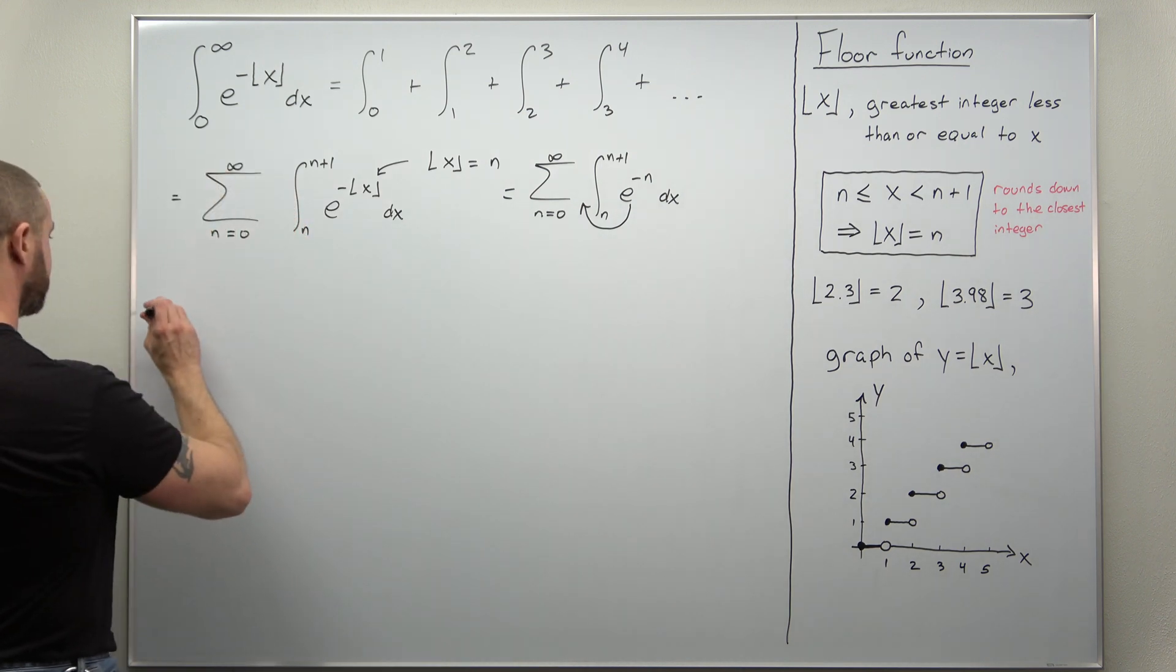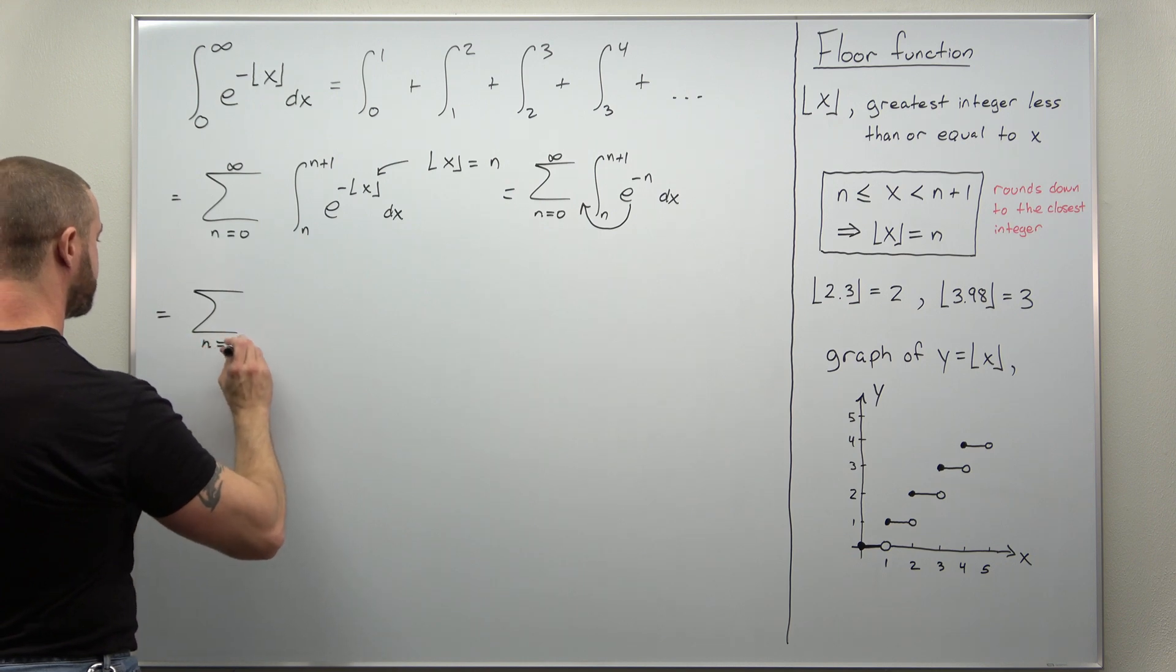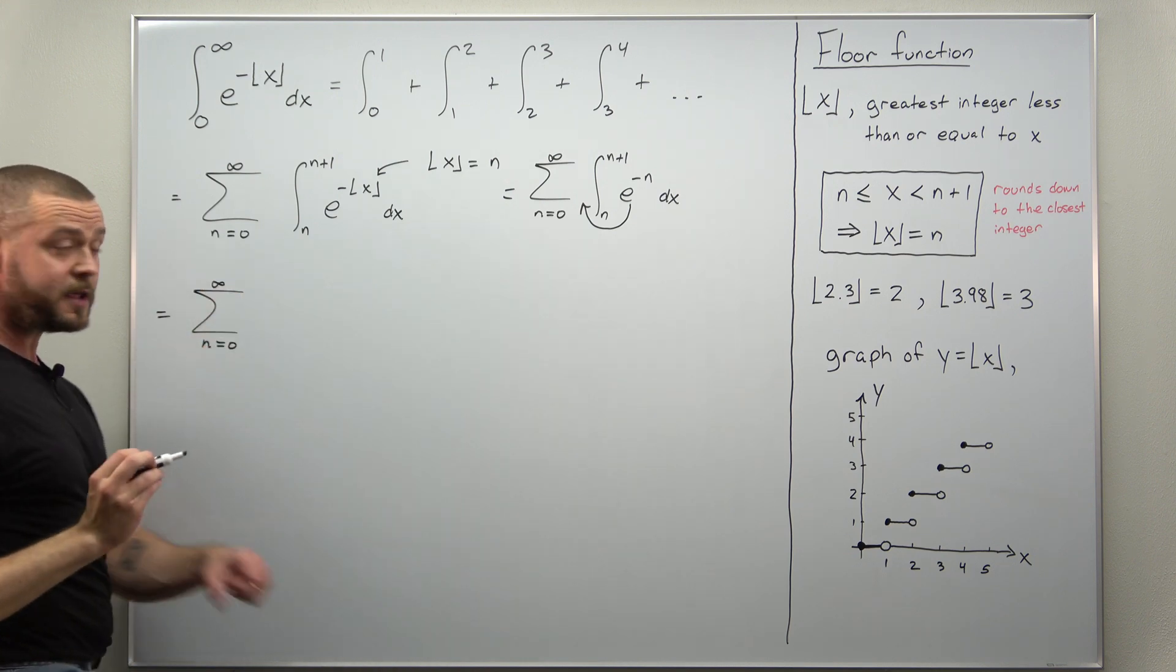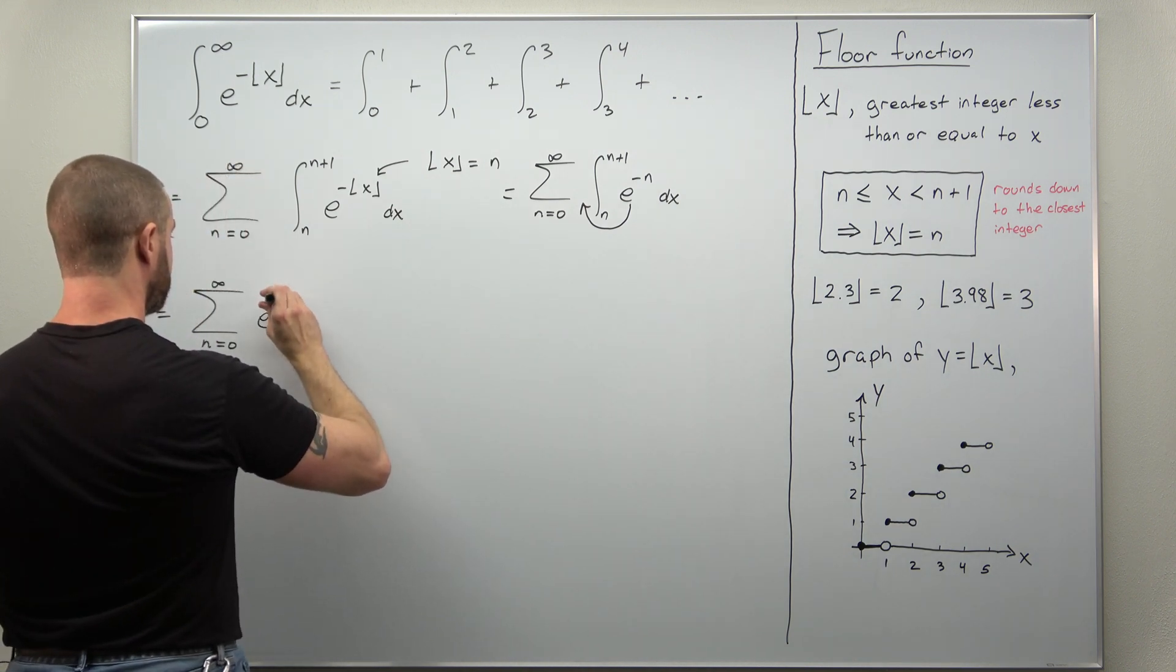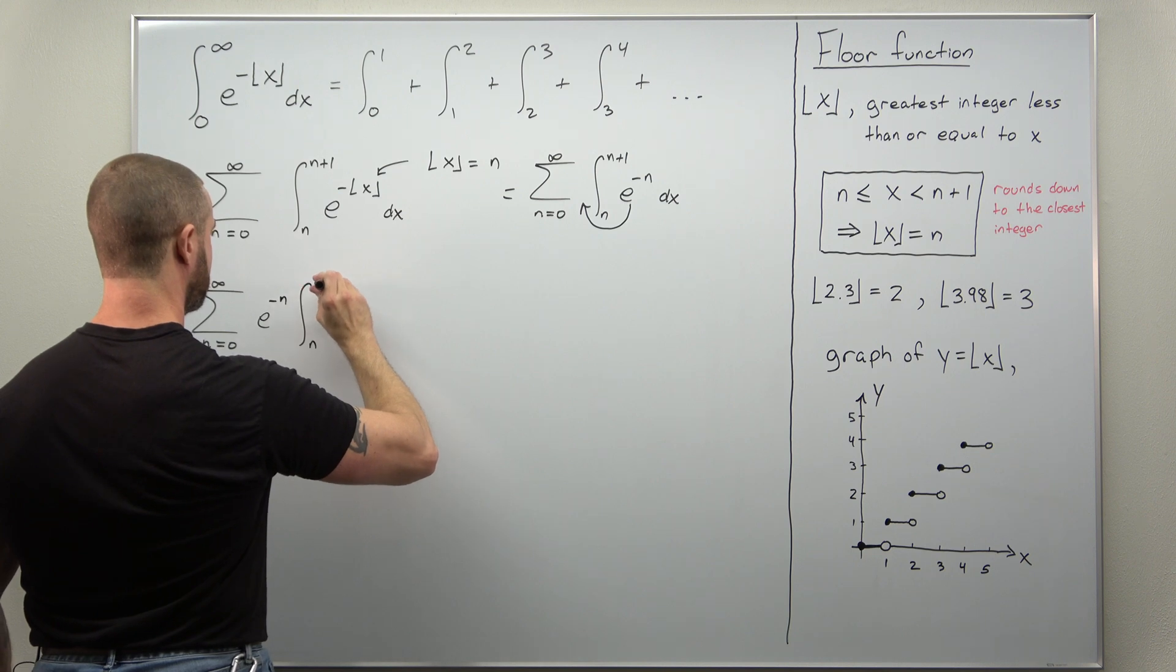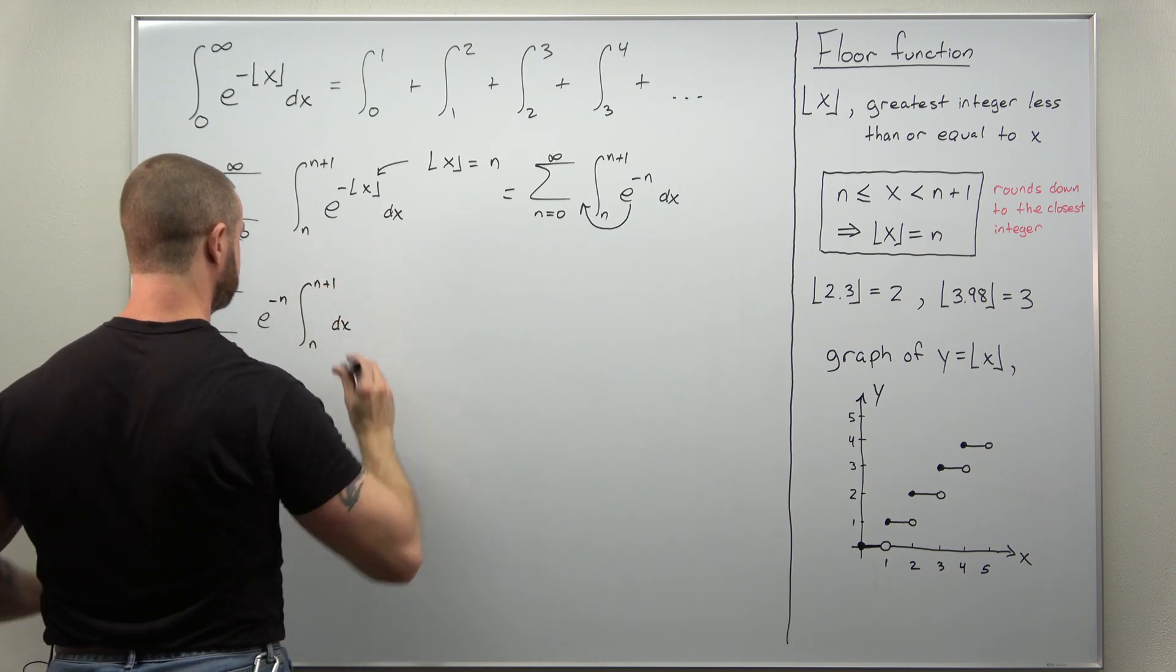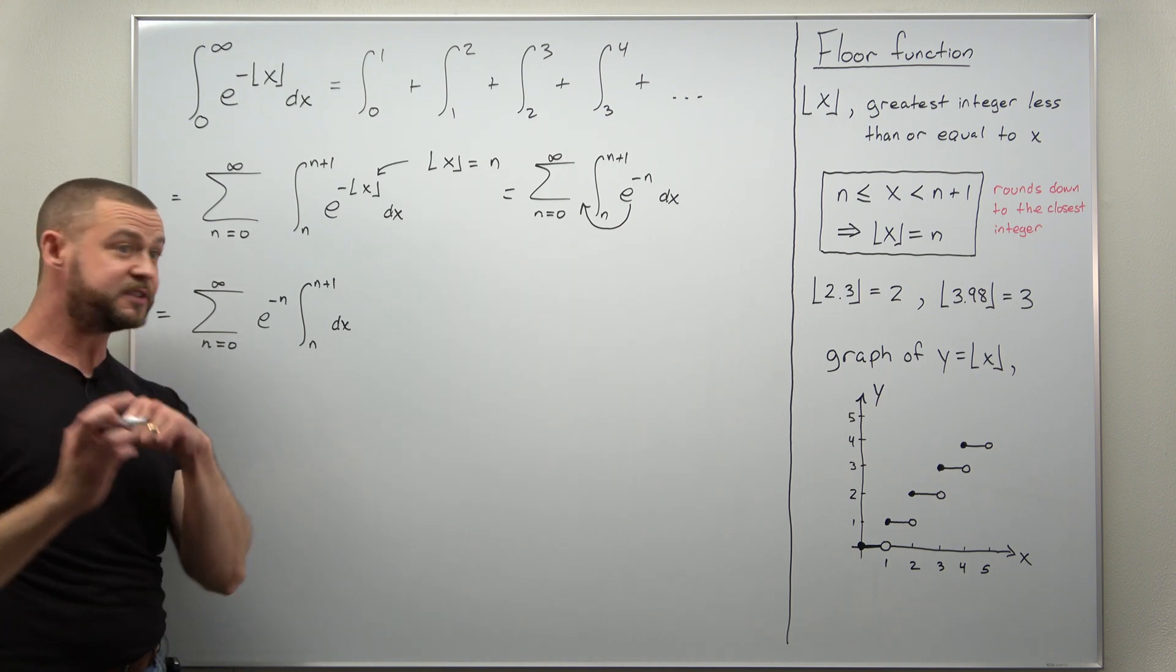So let's go ahead and rewrite this. Now as the sum from n equals 0 to infinity we're going to pull the e to the negative n in front of the integral and our integral now goes from n to n plus 1. And that integral there is really simple to evaluate.